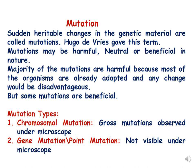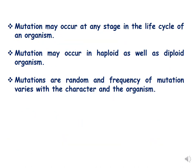These two kinds of mutations are chromosomal mutations and gene mutations or point mutations. Mutations may occur at any stage in the life cycle of an organism; they may occur in haploid as well as diploid organisms, and mutations are random. The frequency of mutation varies with character and organism.